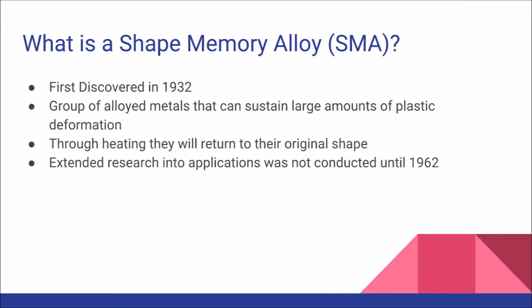To get started, we will first ask: what is a shape memory alloy? It is a group of alloyed metals that can sustain large amounts of plastic deformation, and through heating, they return to their original shape. This technology was first discovered in 1932, but further research was not conducted until 1962.